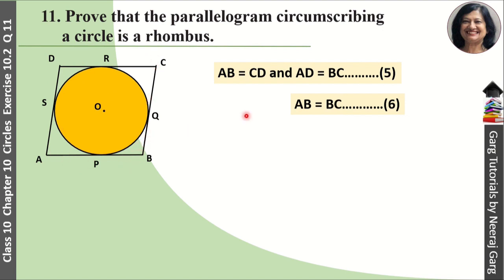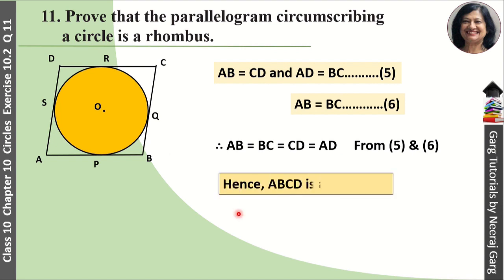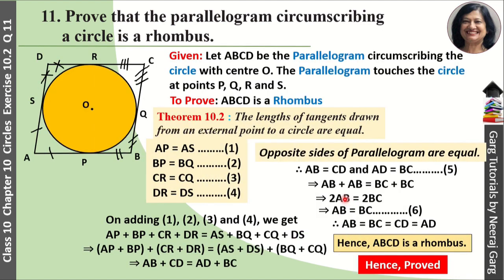If we look at equations 5 and 6, AB equals BC equals CD equals AD. So when the four sides are equal, AB equals BC equals CD equals AD, hence ABCD is a rhombus. This is proved. If you want to write the proof for your notebook, you can pause the video here.